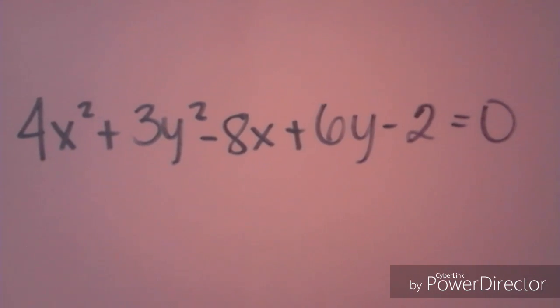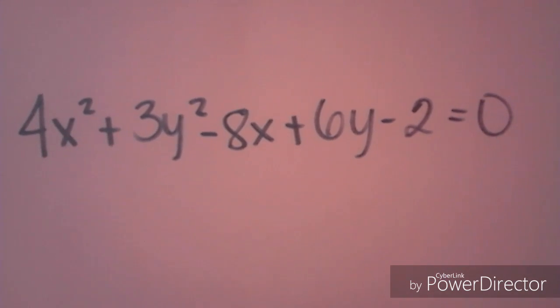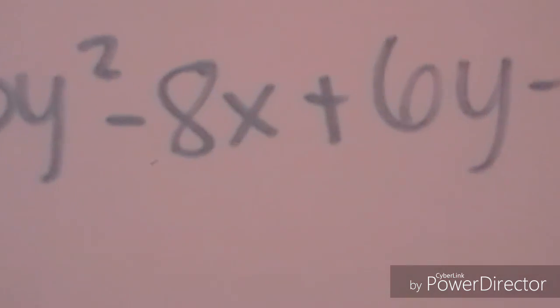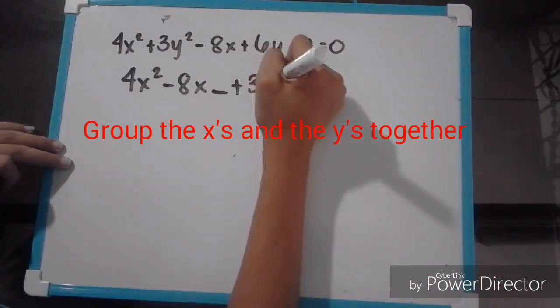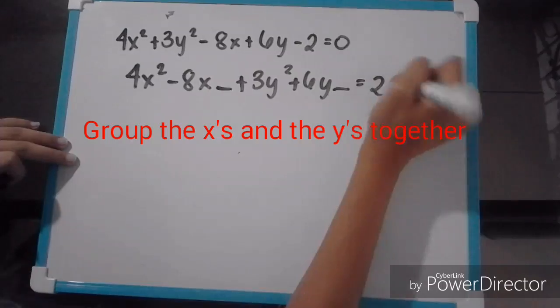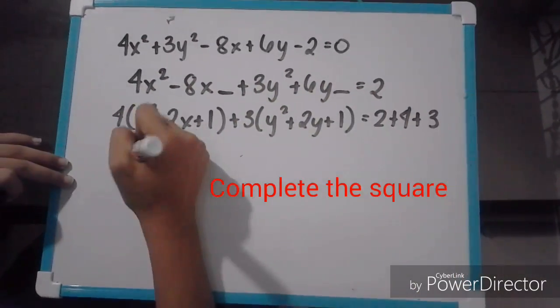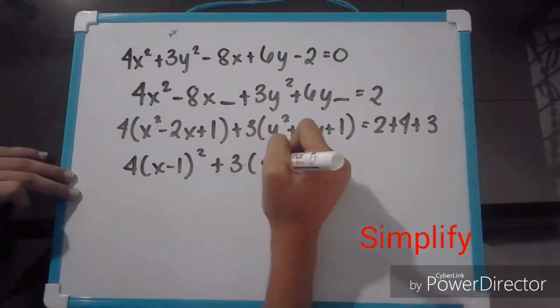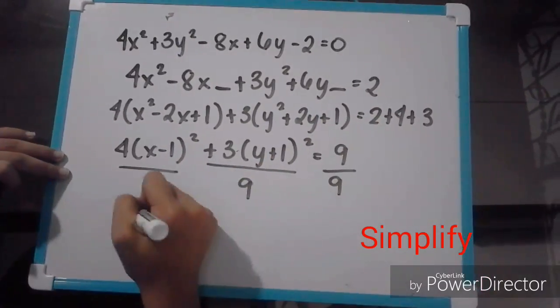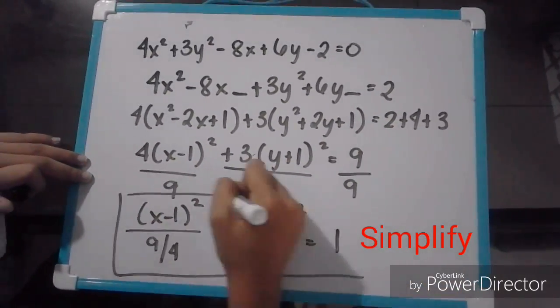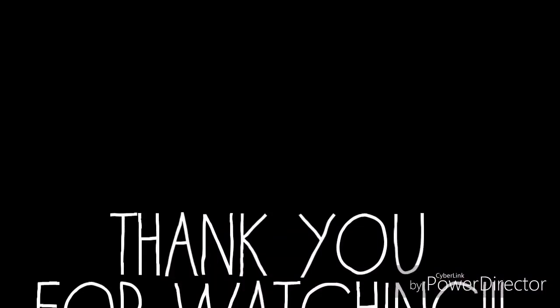Another example is 4x squared plus 3y squared minus 8x plus 6y minus 6 equals 0. Follow the steps from earlier: group the x's and y's together, complete the square, then simplify. Note that one of the denominators will be a fraction, and that's okay. I hope you learned something from this video!